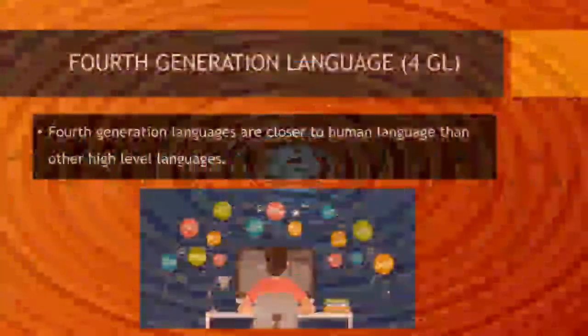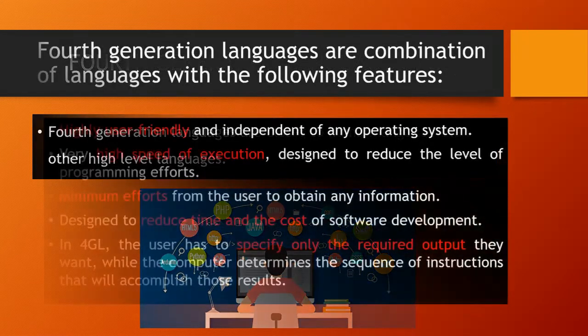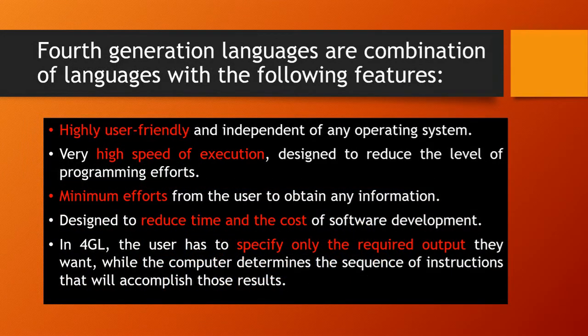Now we will talk about 4th generation languages. They are closer to human language than any other high-level languages. Their features include: highly user-friendly and independent of any operating system; very high speed of execution designed to reduce programming efforts; minimum efforts from the user to obtain information; and designed to reduce time and cost of software development. In 4th generation language, the user has to specify only the required output they want, while the computer determines the sequence of instructions to accomplish those results.